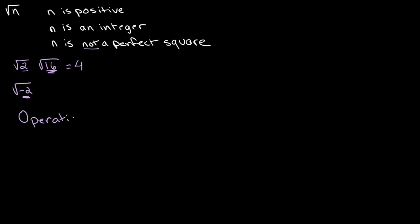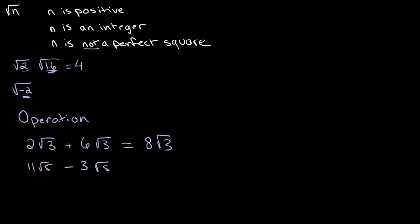The first operation is addition and subtraction. We can add and subtract like surds. For example, if we have 2 root 3 plus 6 root 3, we can add these together to get 8 root 3. Similarly, if we have 11 root 5 minus 3 root 5, we get 8 root 5.